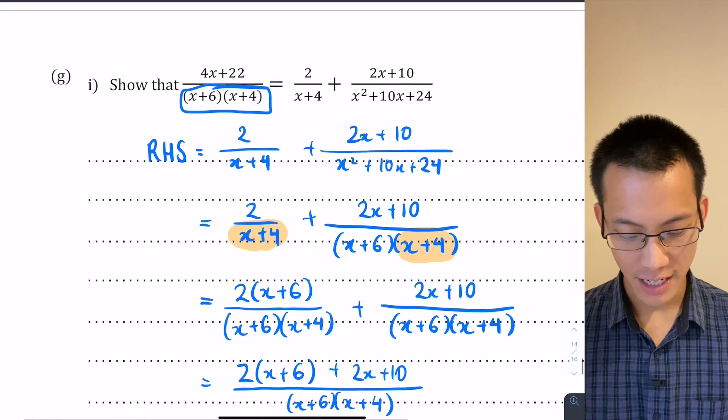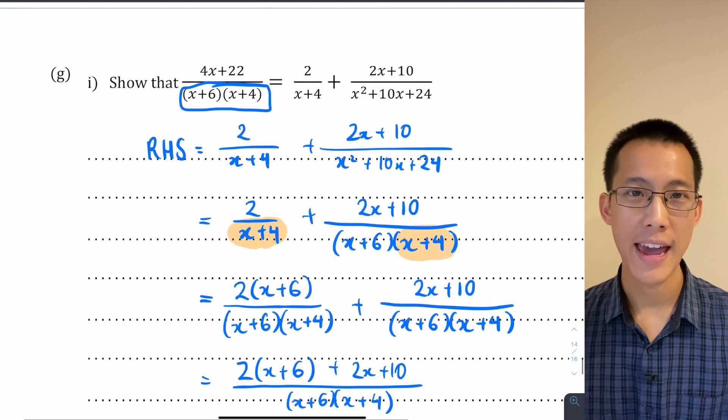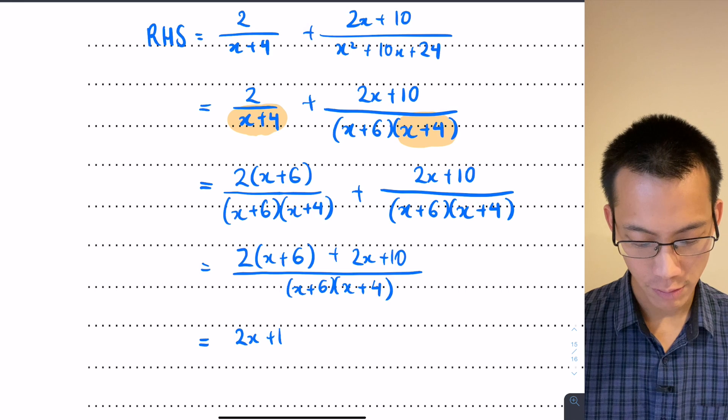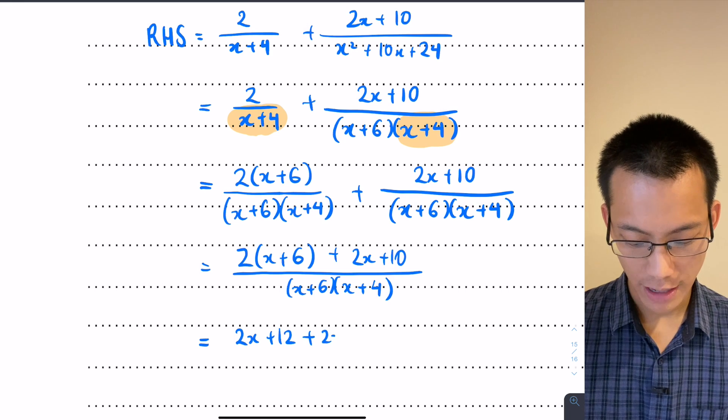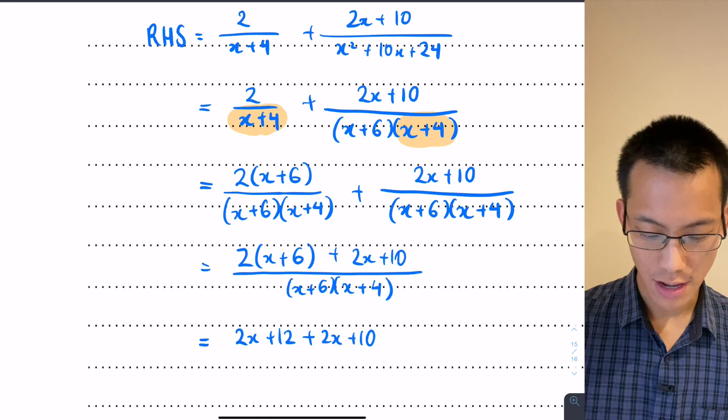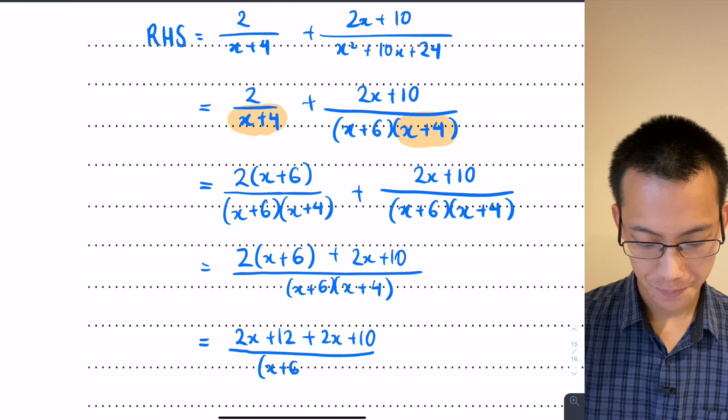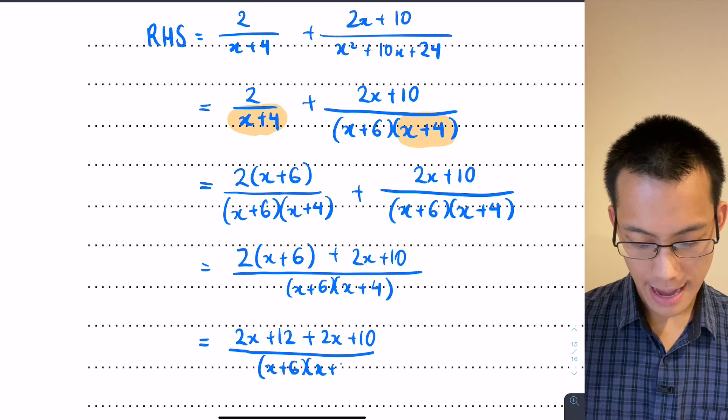We're almost there. On the numerator, again looking back at where I need to end up, on the numerator I just want to expand and collect like terms. So it seems to me I'm going to get 2x + 12 plus 2x + 10, that bit hasn't changed, so this is looking promising. I'm dividing by (x+6)(x+4), and now I'm pretty much there, aren't I?